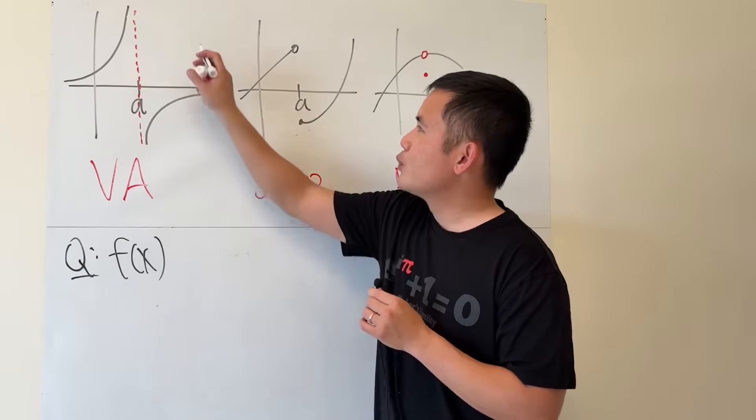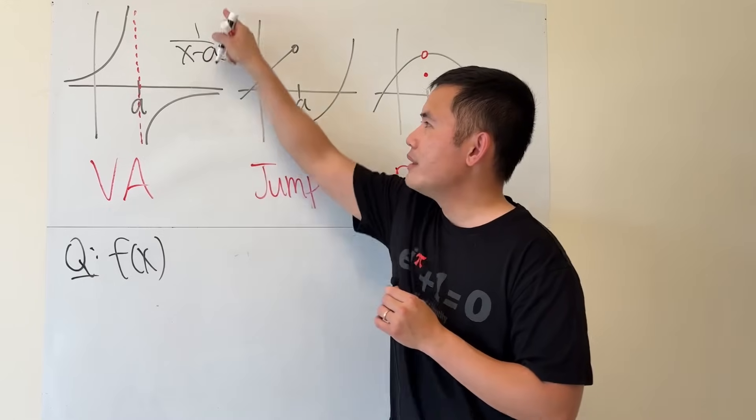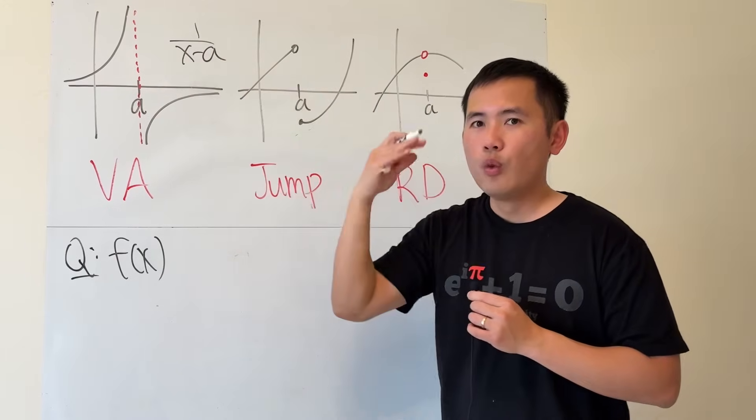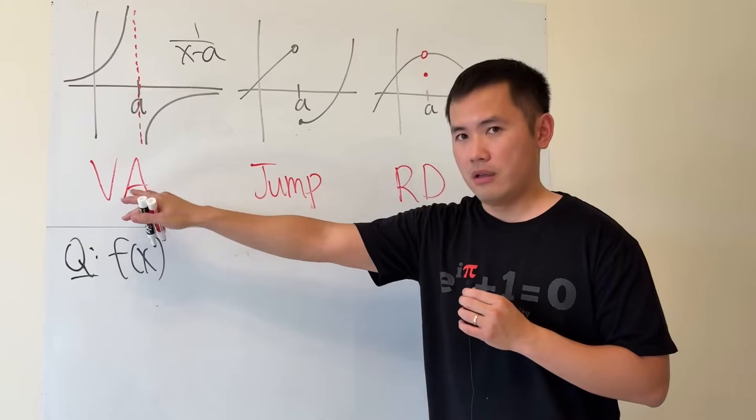For the first one, it's that we have 1 over x minus a. 1 over, if you plug it in here, you get 0. 1 over 0 on the graph, be aware of getting a vertical asymptote.